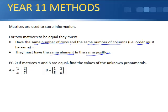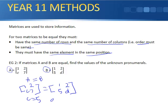So for example two here, we've got matrices A and matrix B are equal on the values of the unknown pronumerals. So if A must equal B, then this one here, one, two, C, seven, is equal to one, two, five, and D. So same positions have to be equal. Well, one equals one, two equals two, C is equal to five, and D must be equal to seven. Same positions.